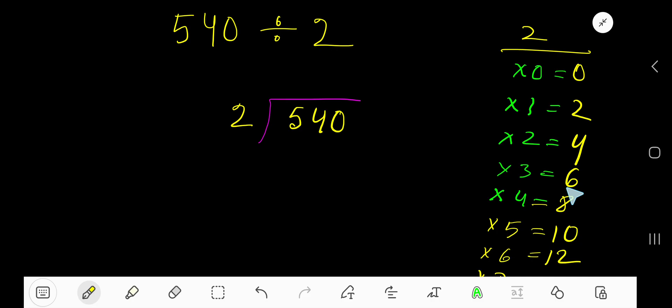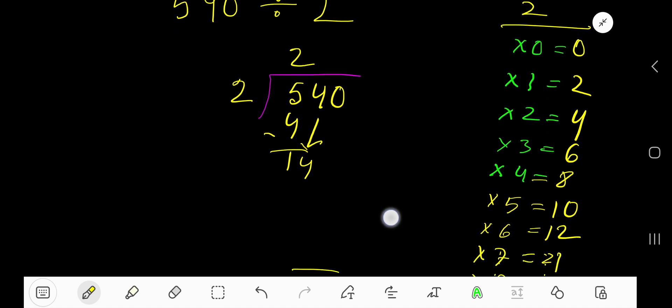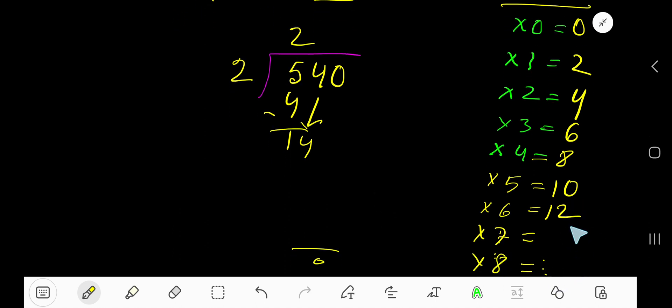2 times 3 is 6, which is greater. 2 times 2 is 4. So subtract 4, bring down this 4. 2 goes into 14 how many times? Look, 2 times 6 is 12.